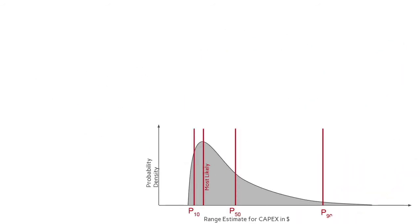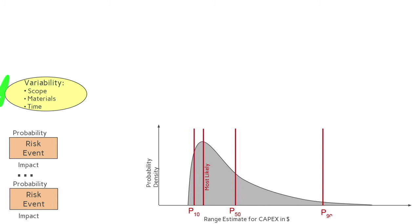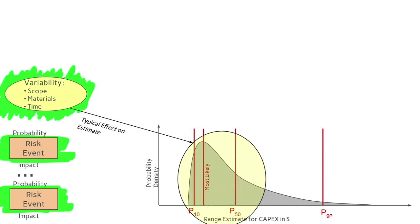Ultimately, the shape of the uncertainty range estimate is a function of both variability and risk events, where variability tends to define the size of the central body, and risk events determine the size of the tail.